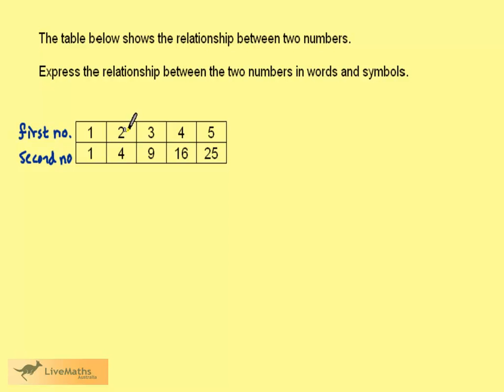1 and 1, 2 times 2 is 4, 3 times 3 is 9 and this pattern continues. Remember 3 times 3 could be known as 3 squared. So we can say here that the second number is equal to the first number squared. This means the first number times itself.